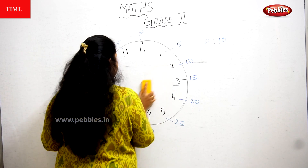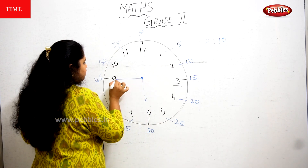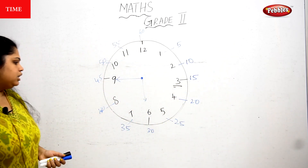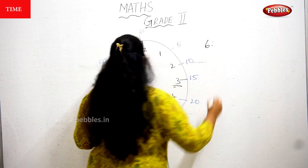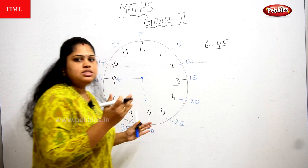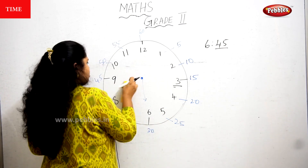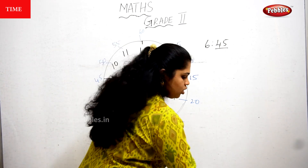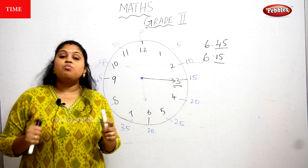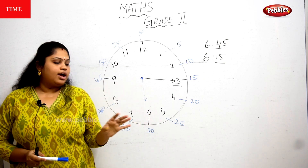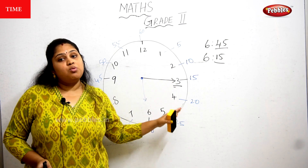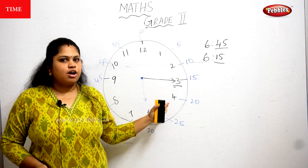Now I'm keeping the small needle at 6 and the big needle at 9. What's the time? The small needle is at 6, and the big needle at 9 means 45. So the time is 6:45. Next, I'm moving the big needle to 3 — what's the time now? 6:15. Always remember: the small needle shows the exact hour number, and the big needle shows the skip-counting-by-5 value.